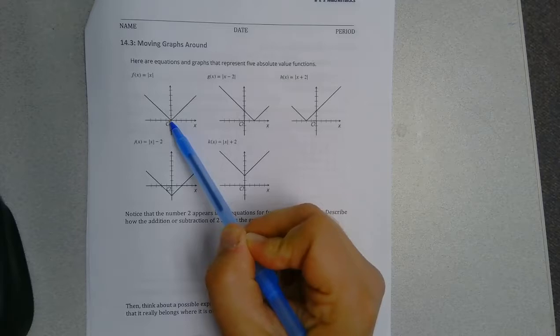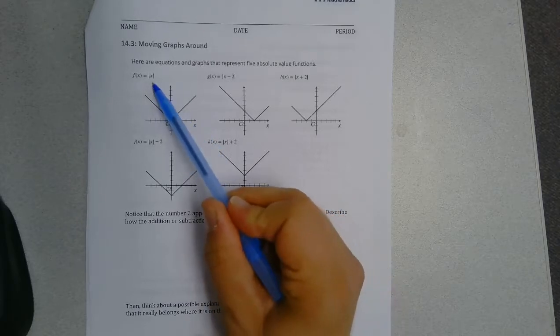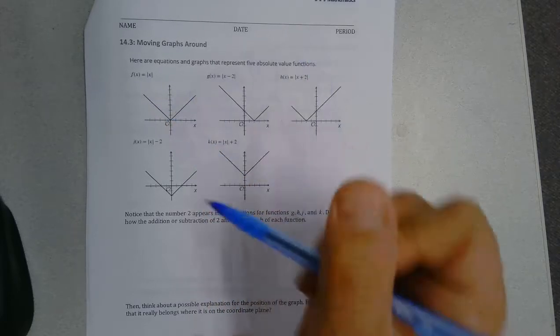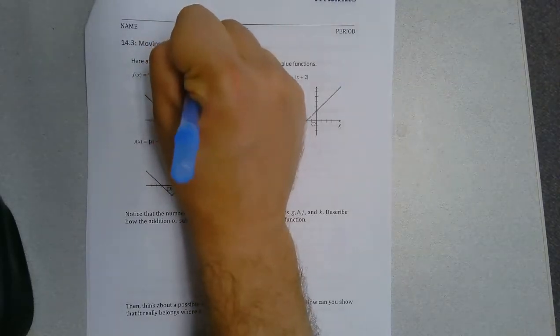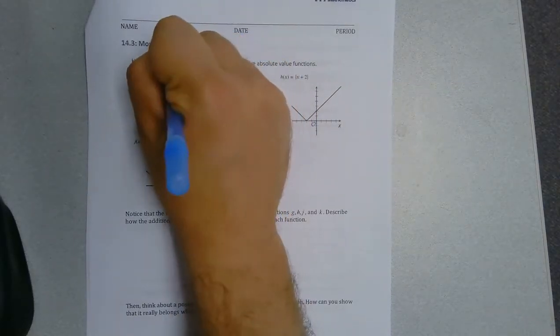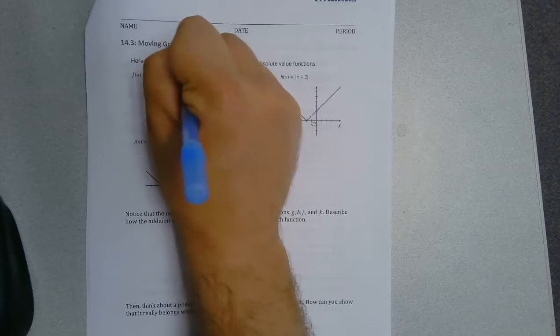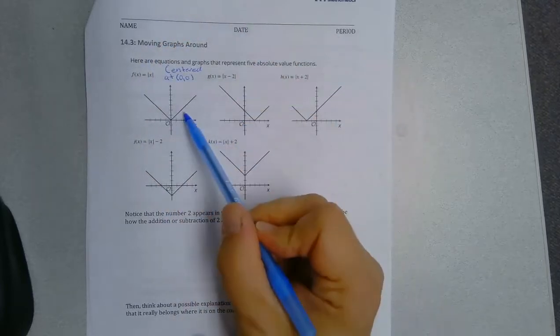The absolute value function of f is centered at 0, 0. So it's centered at the origin.